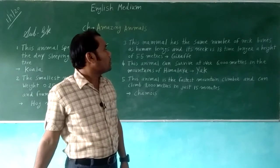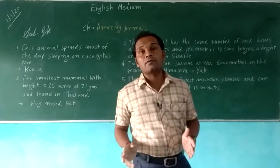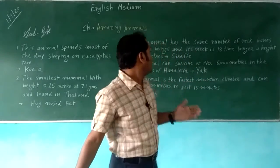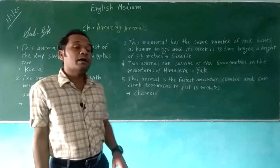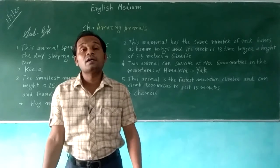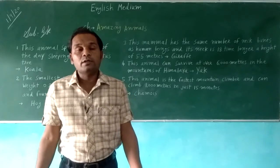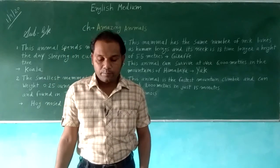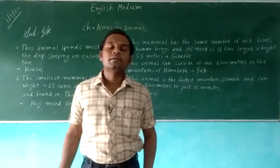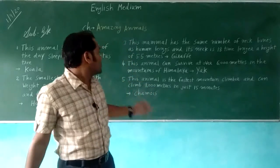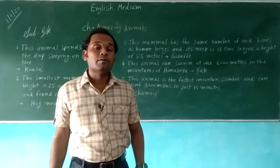This animal can survive at over 6,000 meters in the mountains of the Himalayas. It protects itself from the cold and is identified by its unique curved horns. It is the yak, which can survive at over 6,000 meters in the Himalayan mountains.